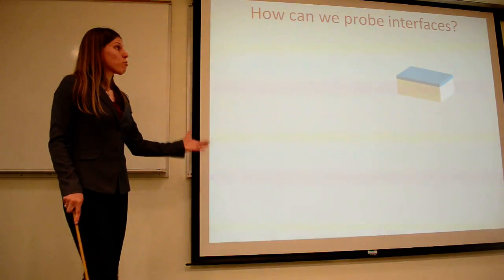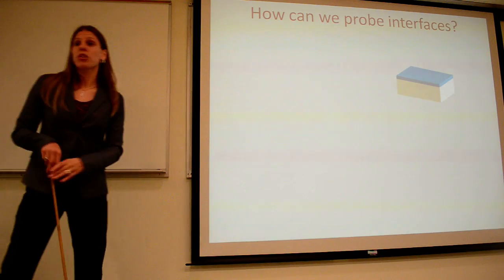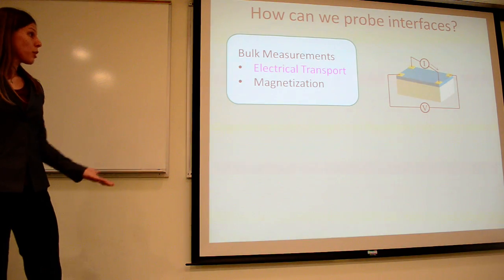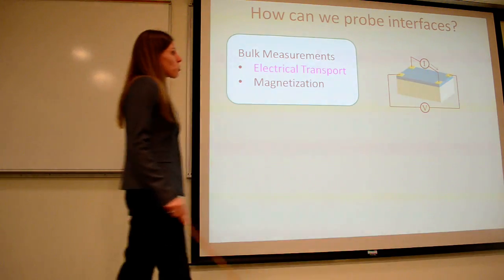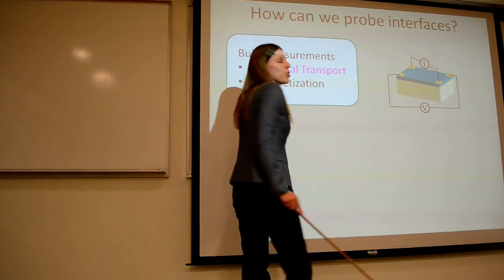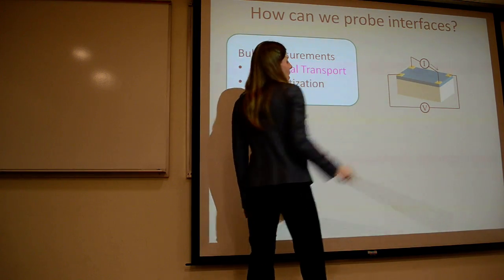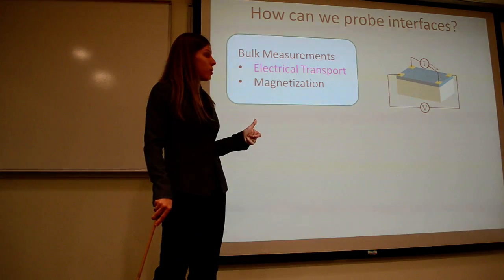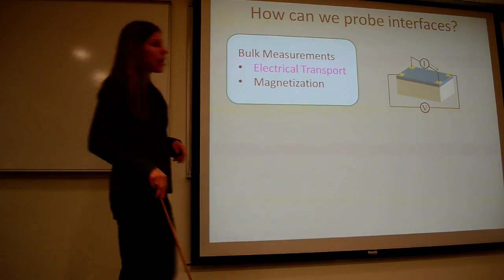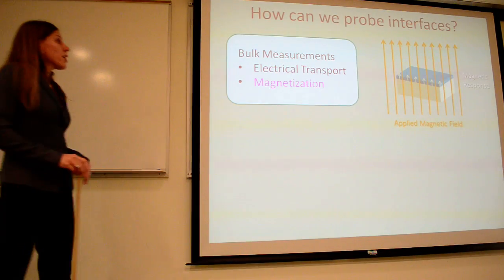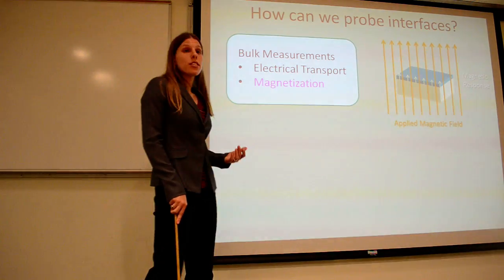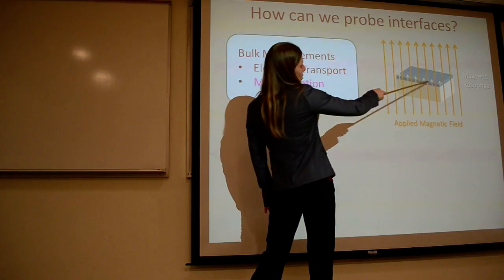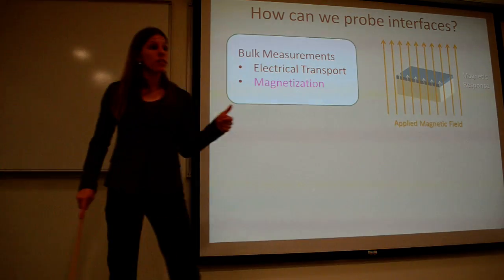So this is an example of where an interface is enabling behavior that isn't possible in the bulk of either materials. So now the question is, how can we actually probe these interfaces? What are the techniques people use to measure what's going on? And specifically, the most common techniques are electric transport and magnetization. So in transport measurements, you attach four contacts to your sample. You'll source a current and measure a voltage. And in this configuration, I've shown a Hall effect measurement. If you wanted to just measure the longitudinal resistance, for example, you would take the voltage across the same two contacts as your current. A second way to measure the properties of these interfaces is magnetization. In this case, you apply a large magnetic field to the sample. And now you're looking for the smaller response, how the sample responds to that applied field.